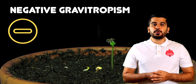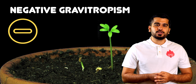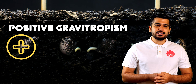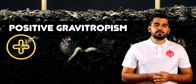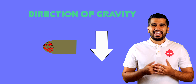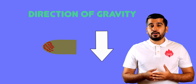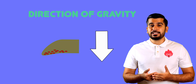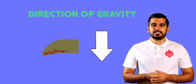The shoot tips show negative gravitropism, and auxin distribution causes the plant to grow against gravity. Whereas the root tips show positive gravitropism, and auxin distribution causes the plants to grow in the direction of gravity. Here's how it happens: auxin accumulates in the lower part of the root tip, slowing down growth there and causing the upper part of the root tip to grow faster, bending in the direction of gravity.